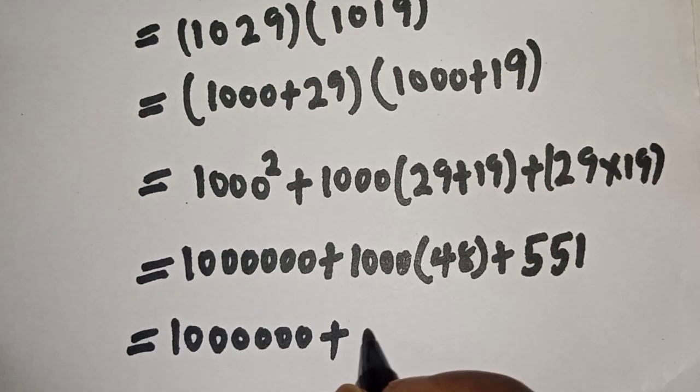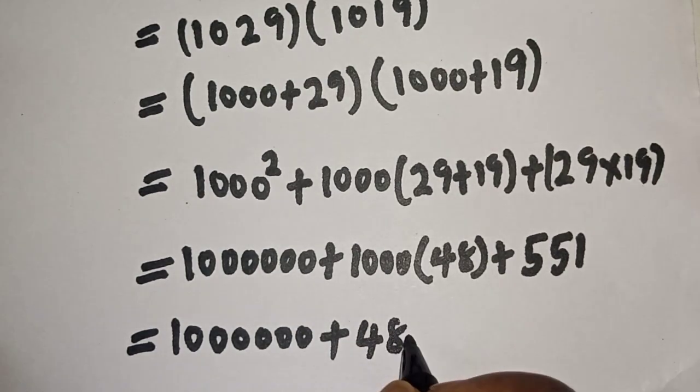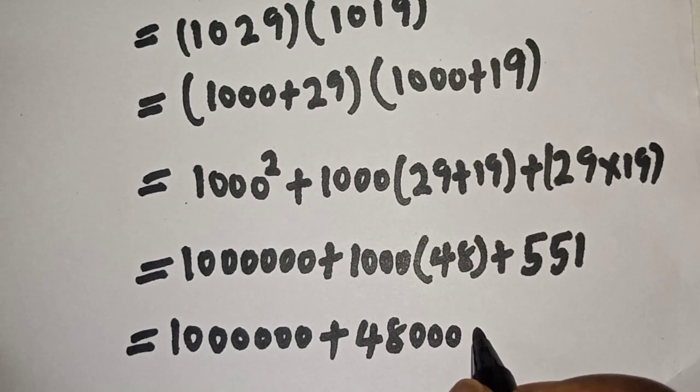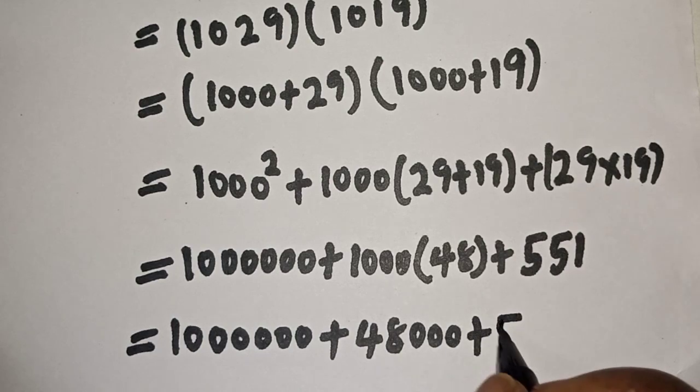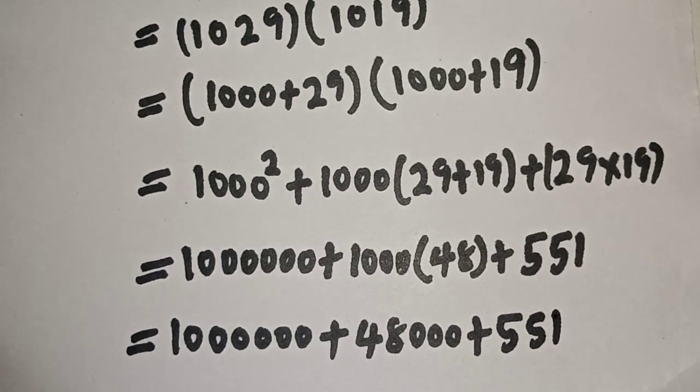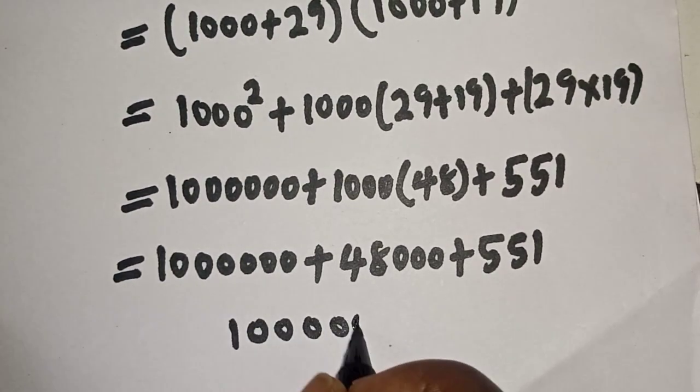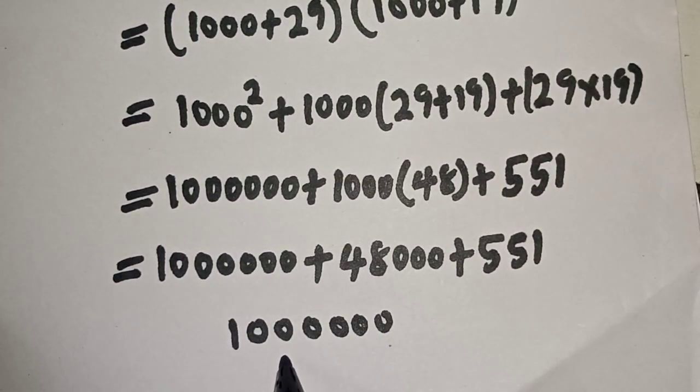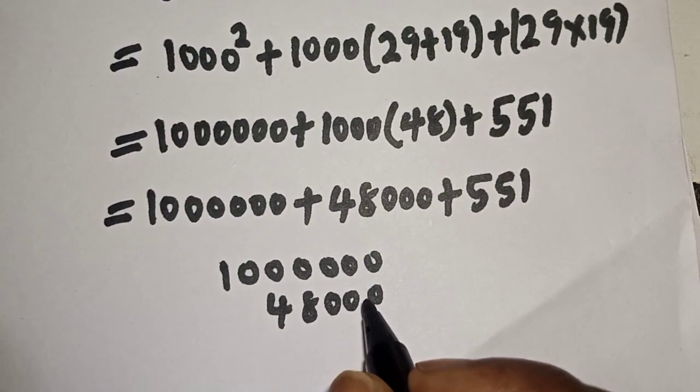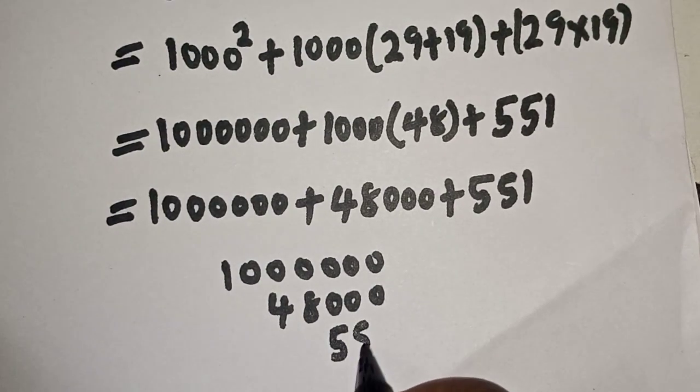And this is equal to 1,000,000 plus 48,000 plus 551. Now let's add everything together: 1,000,000, then here is 48,000, and here is 551.